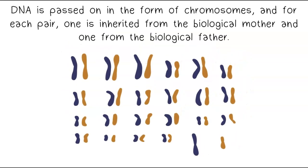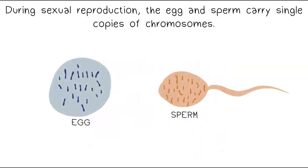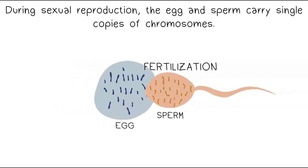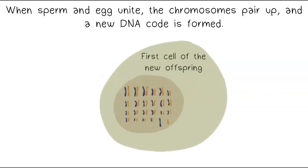DNA is passed on in the form of chromosomes, and for each pair, one is inherited from the biological mother and one from the biological father. During sexual reproduction, the egg and sperm carry single copies of chromosomes. When sperm and egg unite, the chromosomes pair up and a new DNA code is formed.